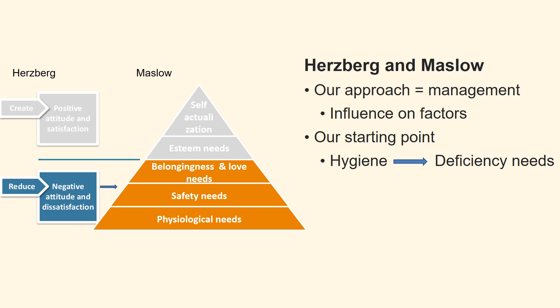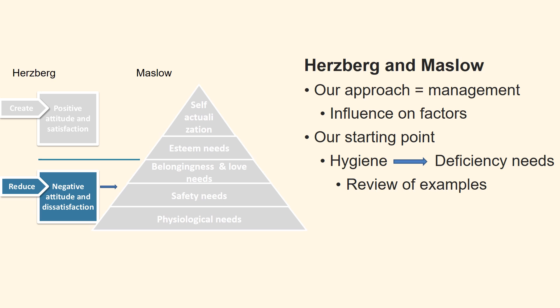First, we show how the hygiene factors from Herzberg's two-factor theory can affect the three deficiency needs in Maslow's hierarchy of needs. We now examine a review of examples of hygiene factors that may affect deficiency needs in the context of Maslow's hierarchy.